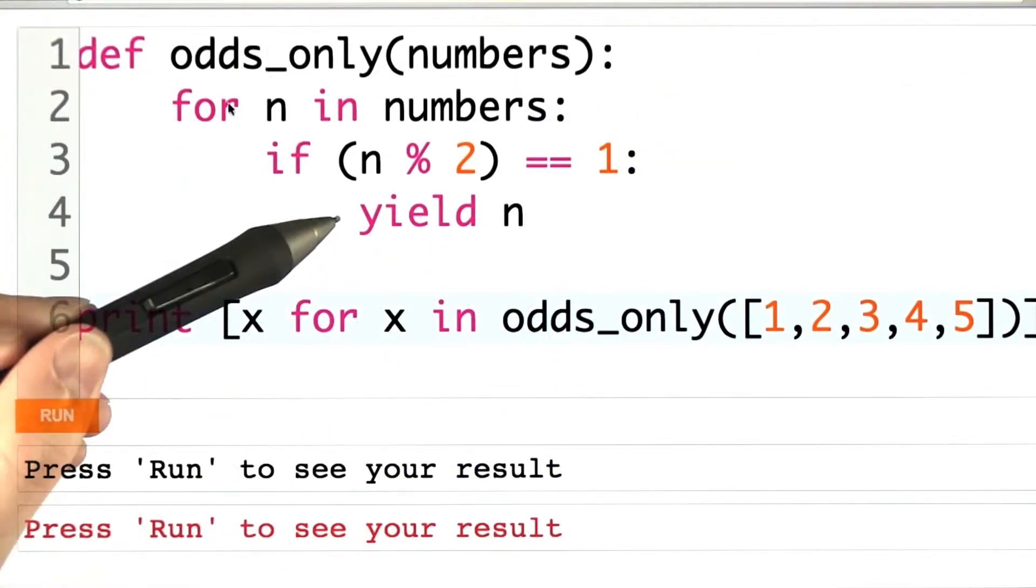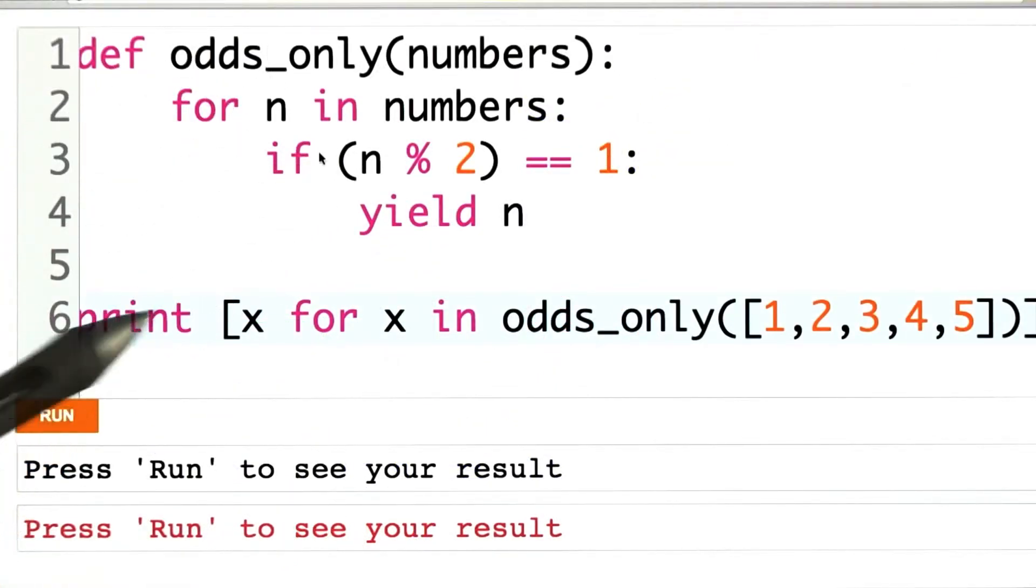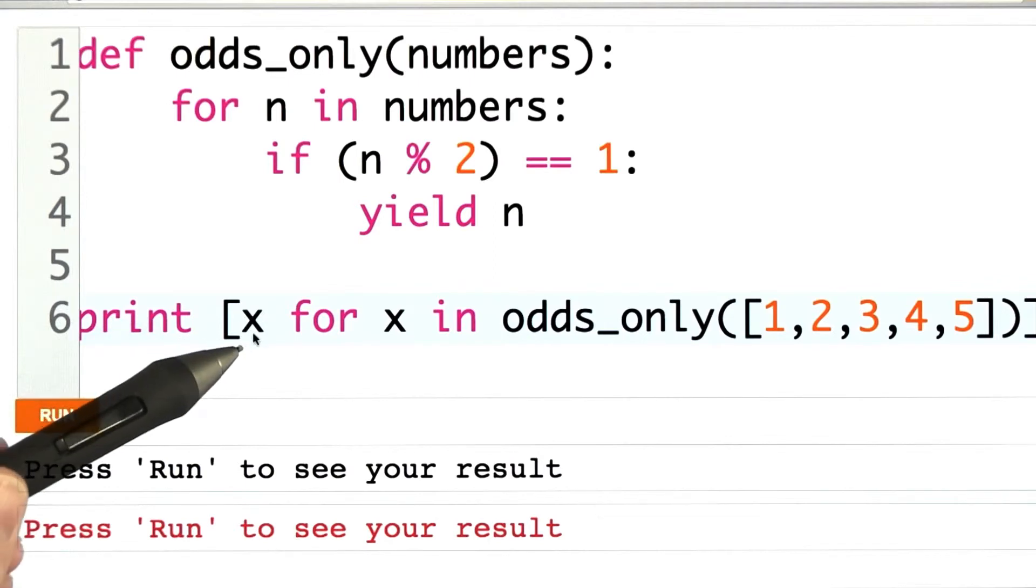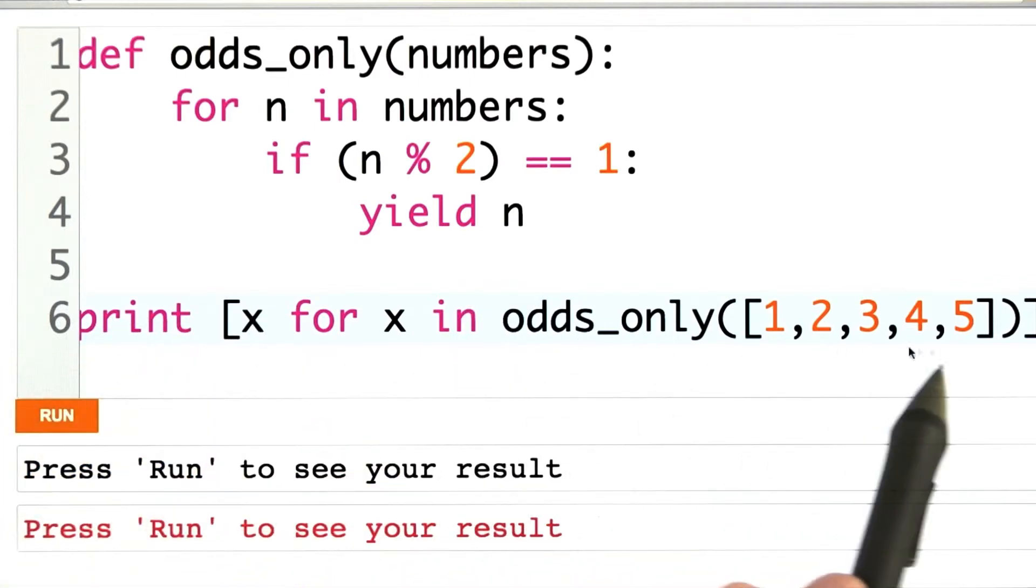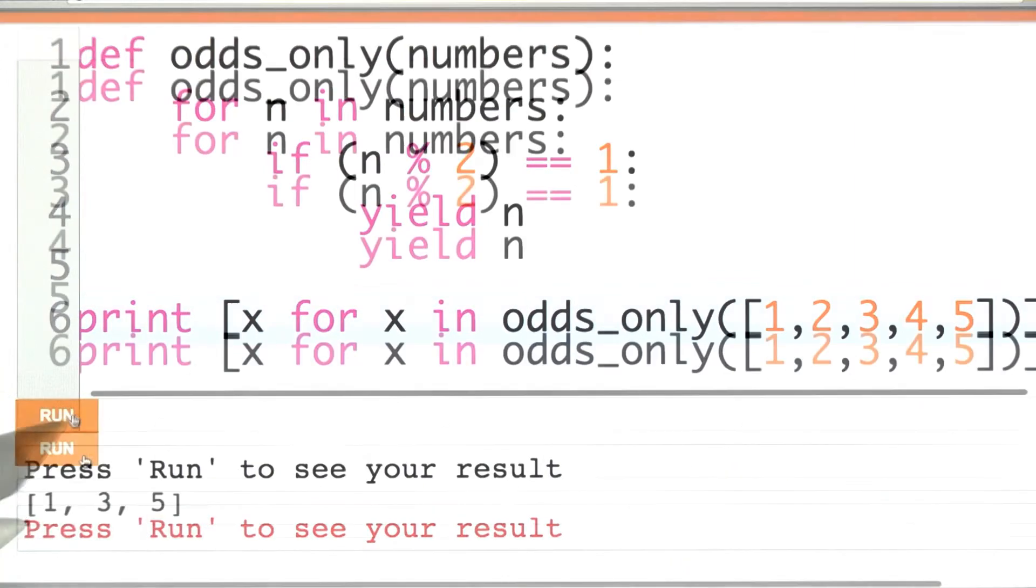Here I've written out our odds_only procedure. I'm just going to show you in the interpreter how this plays out. I'm using a list comprehension. I want to print out every value of x that's in odds_only of 1, 2, 3, 4, 5. And we get 1, 3, and 5 as we expected.